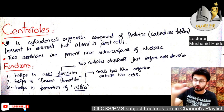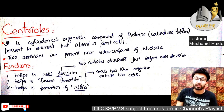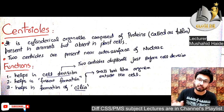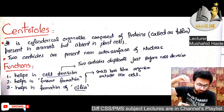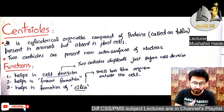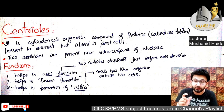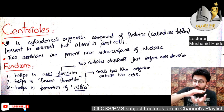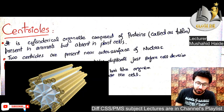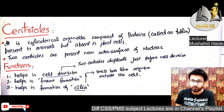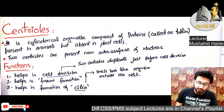Centrioles are also organelles, made of proteins, found only in animal cells — they are absent in plant cells. When a cell divides, it divides into two parts. Centrioles are cylindrical organelles composed of proteins present near the outer surface of the nucleus, and they help in cell division.